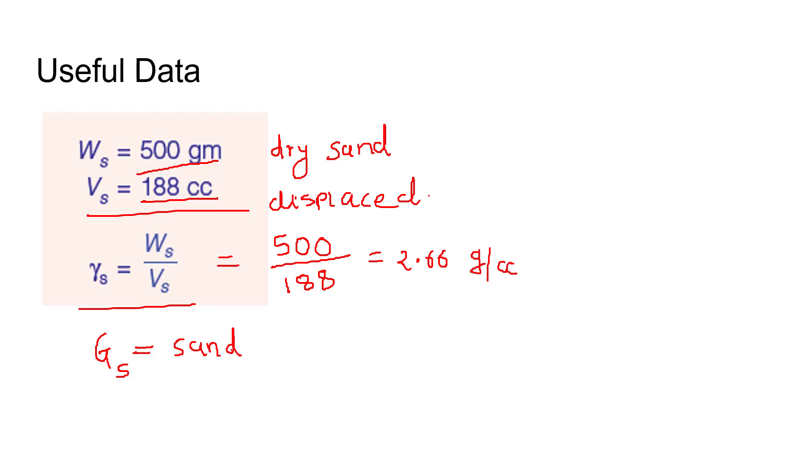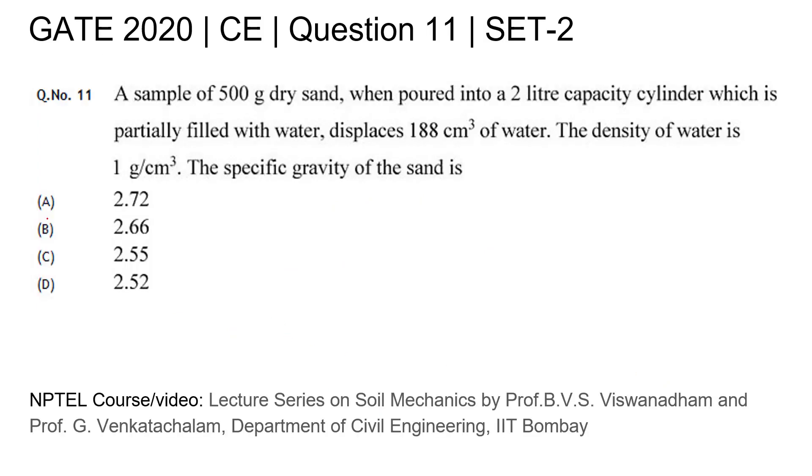Now it's about Gs. Gs is nothing but specific gravity of sand divided by specific gravity of water. Everyone knows that specific gravity of water is 1 gram per cc, so answer will be 2.66. So our option is number B.